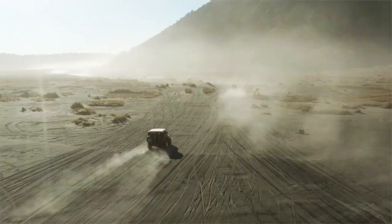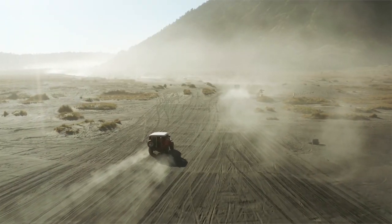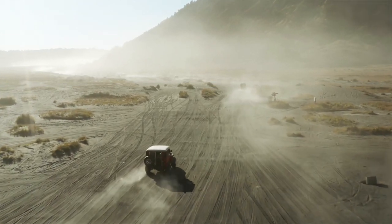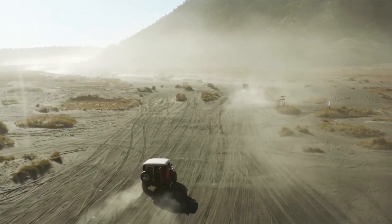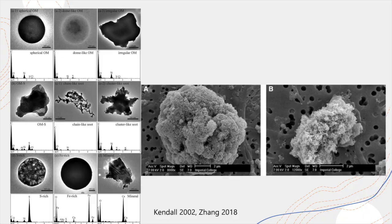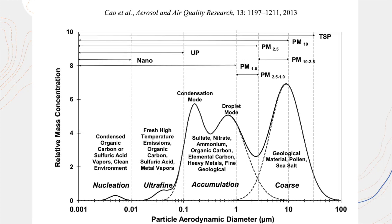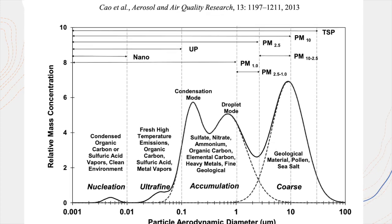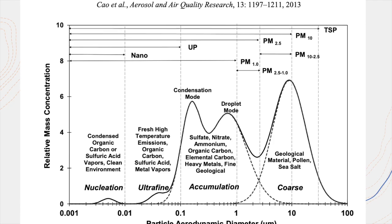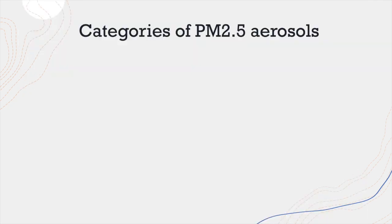PM 2.5 is a mixture of solid particles and liquid droplets found in the air. Some particles such as dust, dirt, soot, and smoke are large or dark enough to be seen with the naked eye. But other components of PM 2.5 are so small they can only be seen with an electron microscope. PM 2.5 particles can be a wide range of sizes and shapes, and they can be made up of hundreds of different chemicals, so we need a way to group them.